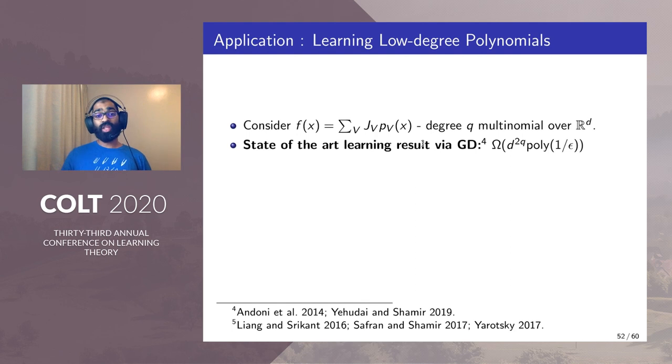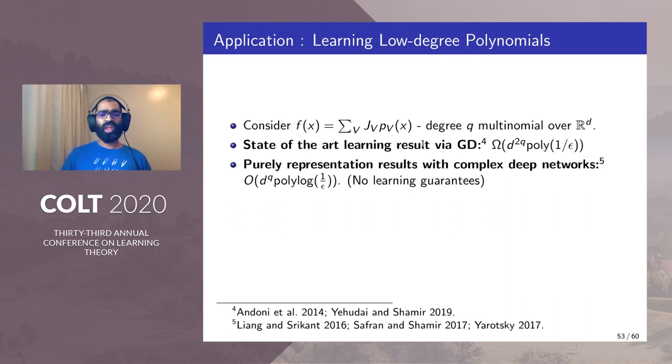The state of the art learning results for this problem via gradient descent requires d^(2q) times 1/ε² number of non-linear units. Purely representation results with complex deep networks require polylog(1/ε) number of non-linear units so there's a huge gap between these two regimes.